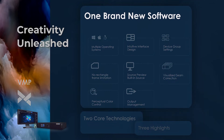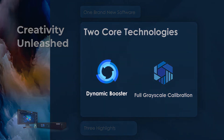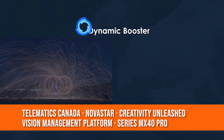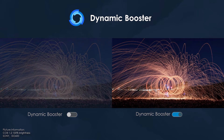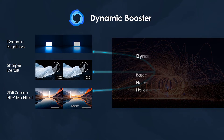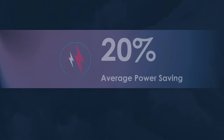Let's move on to VMP's dynamic booster and full grayscale calibration tools. Dynamic booster can adjust image brightness and details to an ideal level. Images from an SDR file can display with a level that approaches HDR quality. Novastar's dynamic algorithm analyzes frame-by-frame content to correct for exposure in highlights and details in shadows.